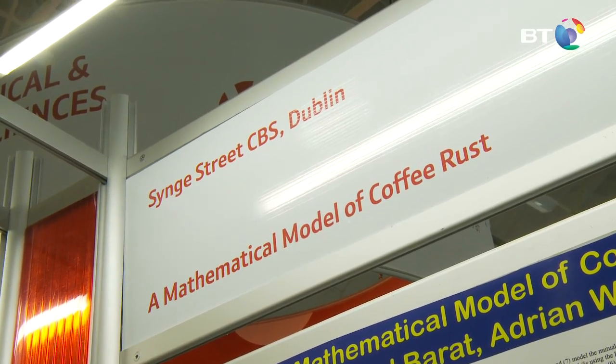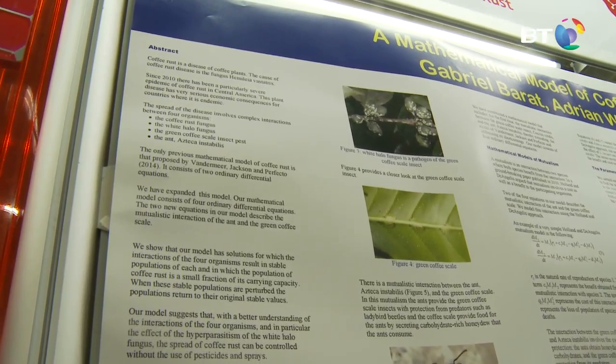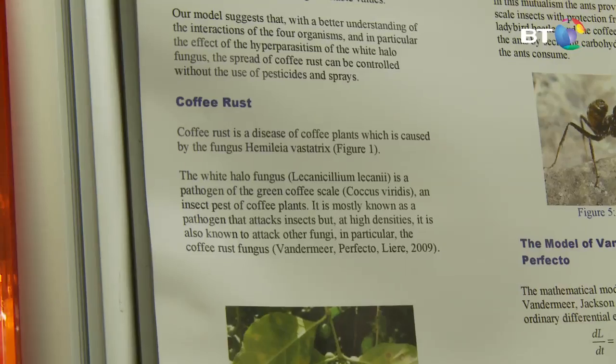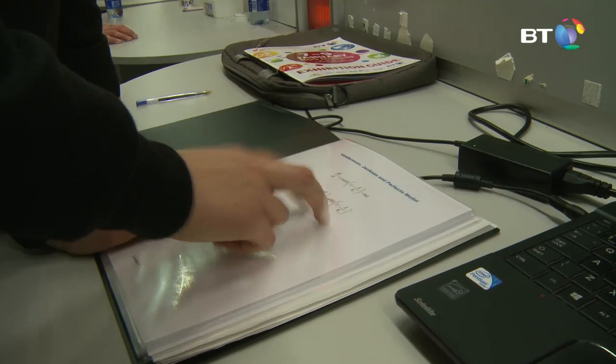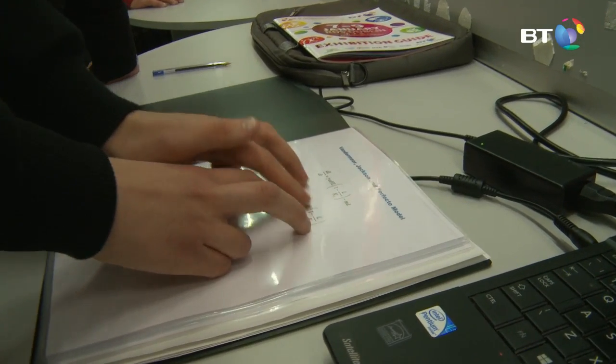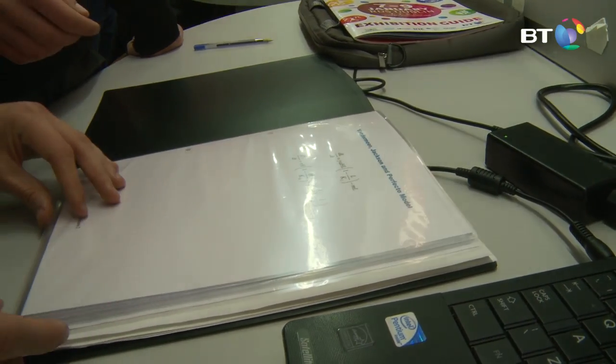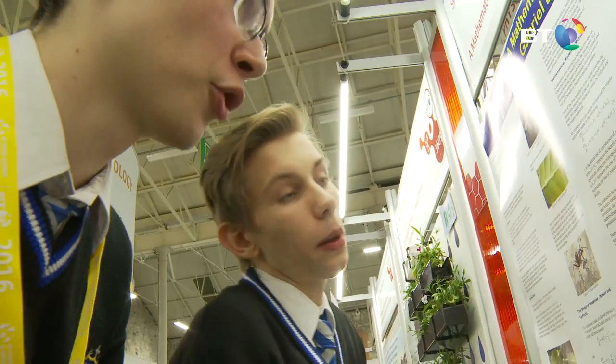Our project investigates a disease called coffee rust. This is a disease which, when it gets on the coffee plant, it will eat away the leaves, and once the leaves are gone the plant can't make coffee anymore. We have seen there's been a big economic effect in countries such as Central America, where there's an endemic of this disease and they're suffering because of it.